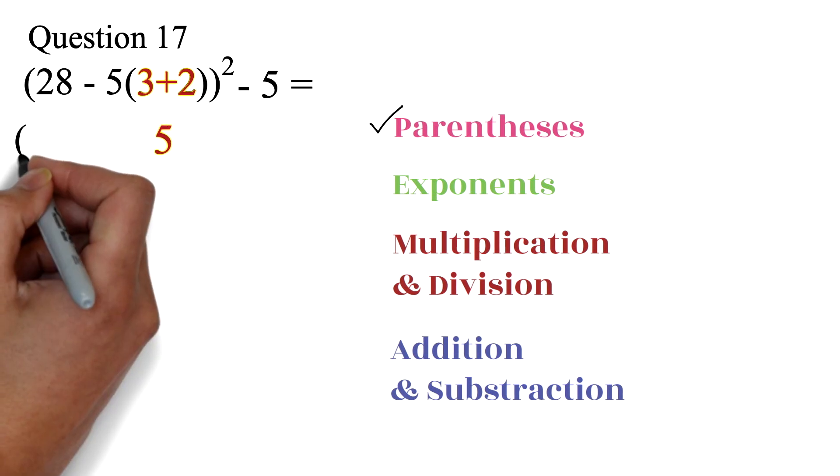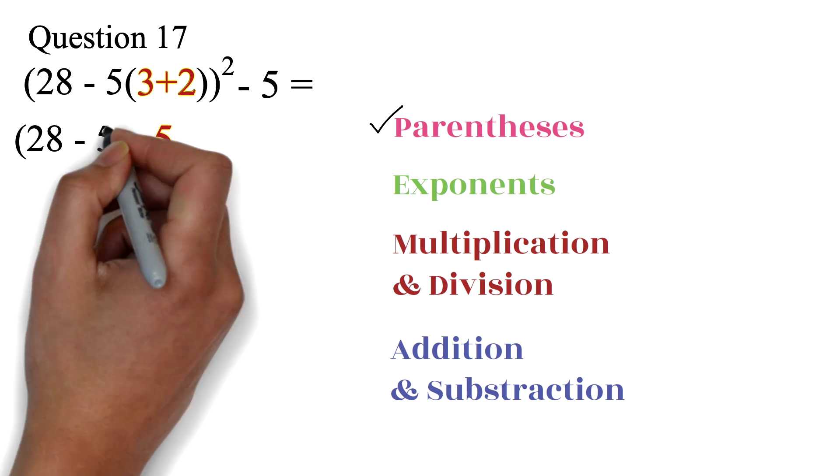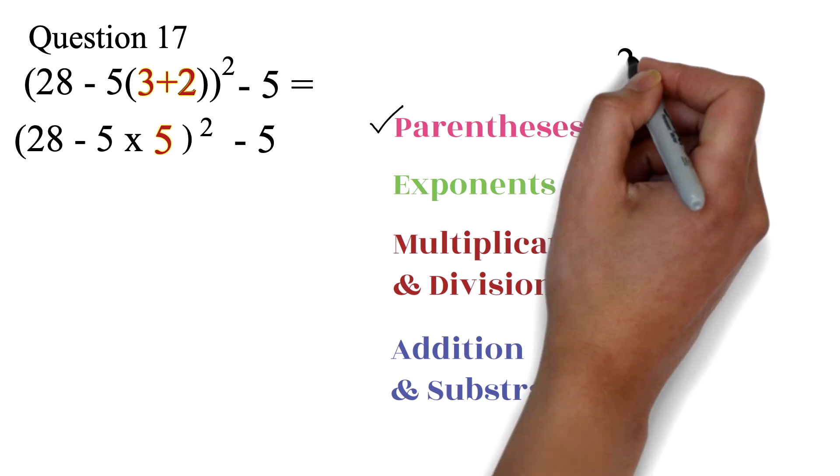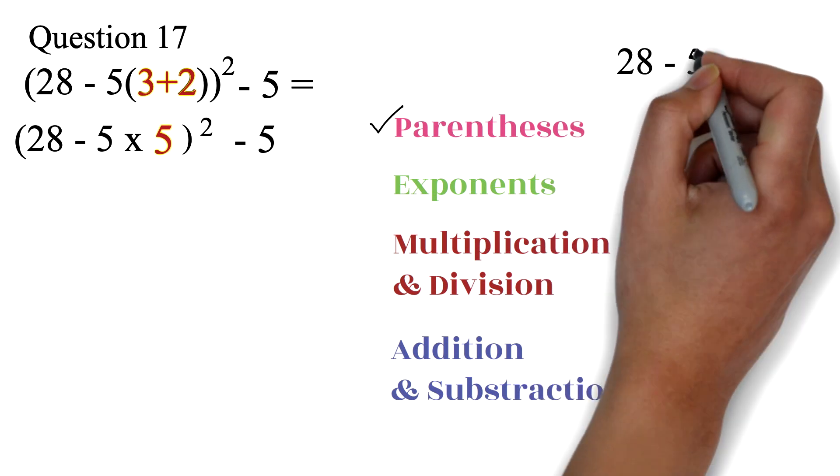We now have parentheses, 28 minus 5, times 5, exponent 2, minus 5. Using the order of operation, we have to perform the operation in parentheses. We'll notice that the operation in parentheses also has multiple operations. That's subtraction and multiplication.